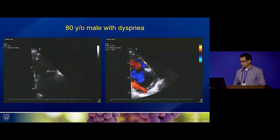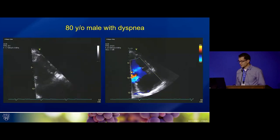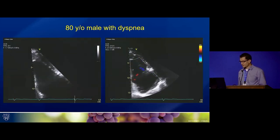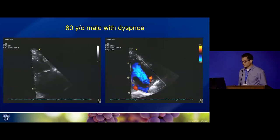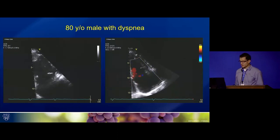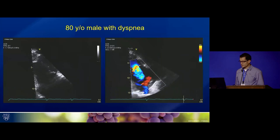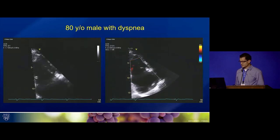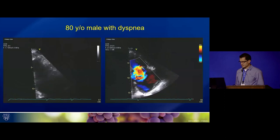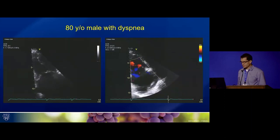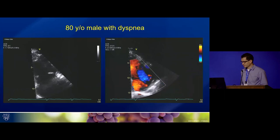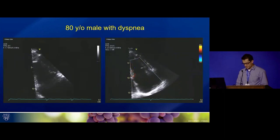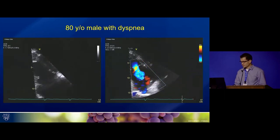Here are the initial images from the echocardiogram — the mitral tricuspid RV inflow view. Pay attention to the leaflets and where they're meeting or not meeting, and you see a very broad jet of tricuspid regurgitation on the right.